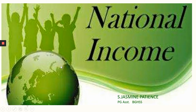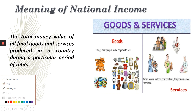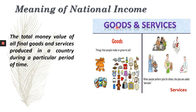Meaning of National Income. Can you see the slide? There is a picture here — goods and services. What do you mean by goods? Things that people make or grow to sell are termed as goods. Goods can be seen physically — goods are tangible, you can see them, feel them, and use them. Whereas services are performed by people; when people perform jobs for others, those jobs are called services. We have already seen the types of goods and services in 11th standard.